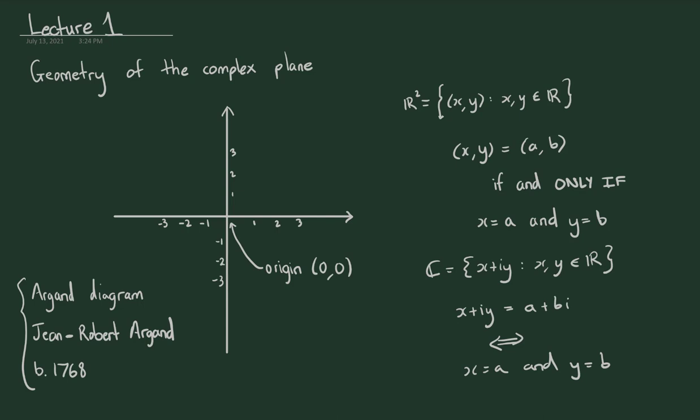When we use this plane representation to plot complex numbers, it is called the complex plane, or sometimes called the Argand diagram — named after the Swiss amateur mathematician Jean Robert Argand, born in 1768. He may not have been the first to think about plotting complex numbers this way, but the diagram has been named after him. For example, the complex number 1 + 2i is plotted at x = 1, y = 2.